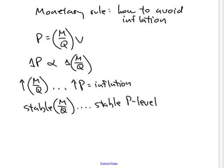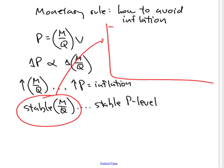If keeping M over Q stable gives you a stable price level, then what does this mean? To keep M over Q stable means that the central bank—and this is the rule—the rule itself is that the central bank...